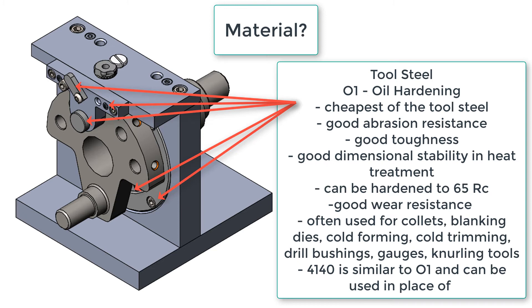It's an oil hardening steel, it's the cheapest of the tool steels, and it shows good abrasion resistance, good toughness. It has very good dimensional stability when heat treated. It can be hardened to Rockwell C 65 and has good wear resistance.